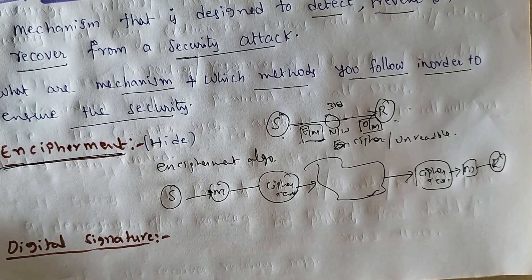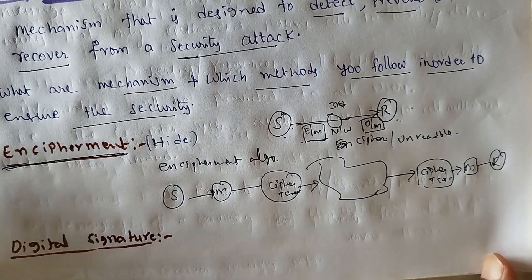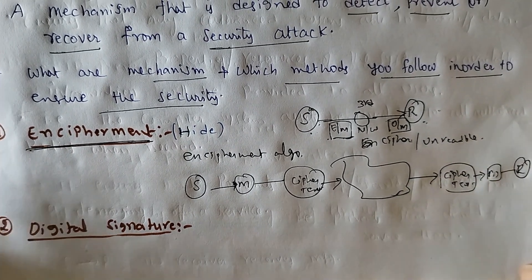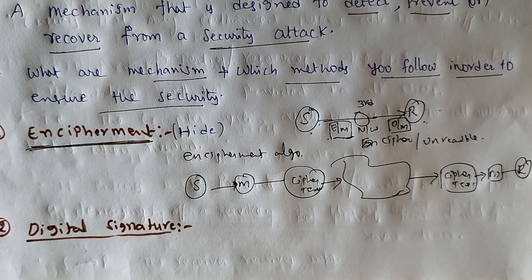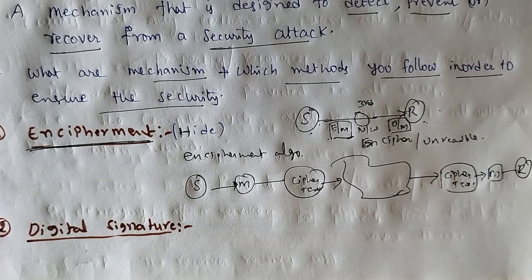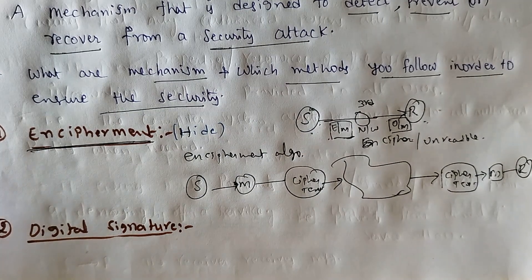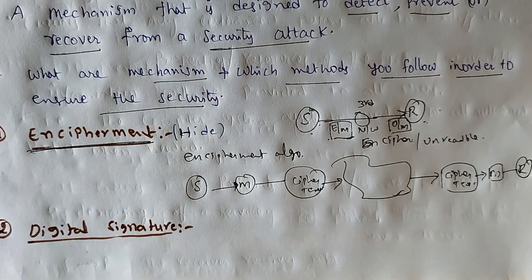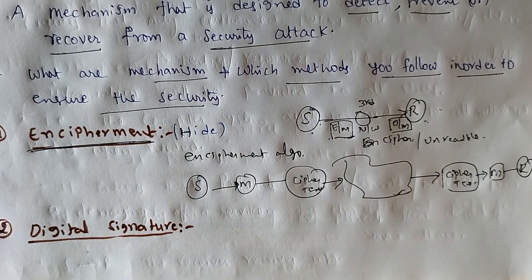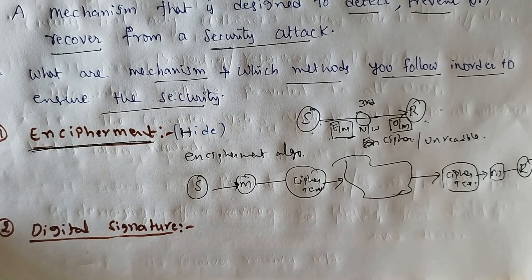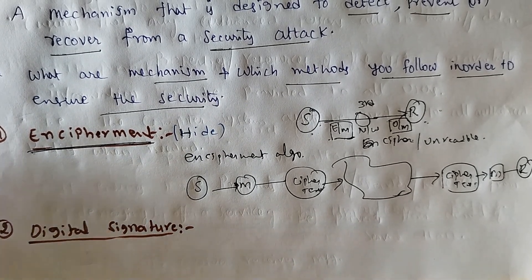The second mechanism is digital signature. What is the meaning of digital signatures? Nowadays we know everyone is uploading YouTube videos. Digital signatures are used for authentication. For example, suppose you have a YouTube channel and you post your own content — in the background in a blurred mode we will add our symbol or our name, and that is called a digital signature.